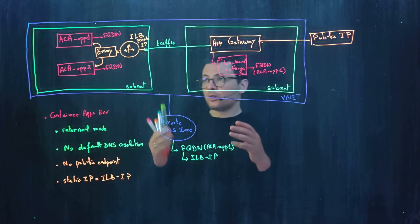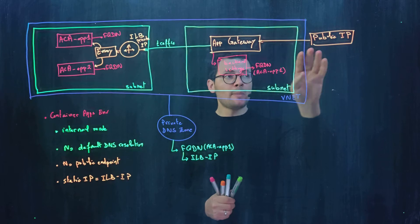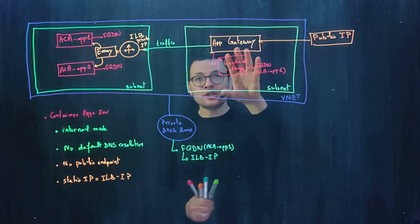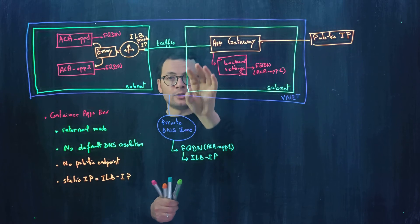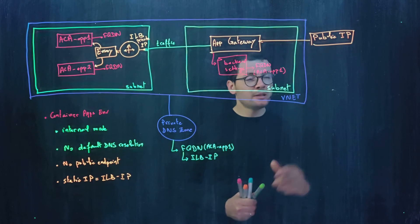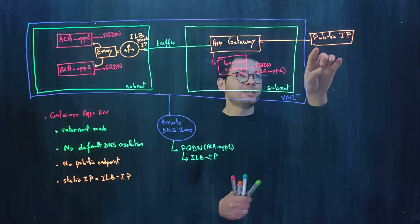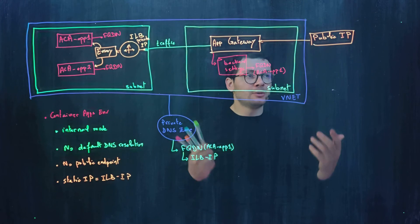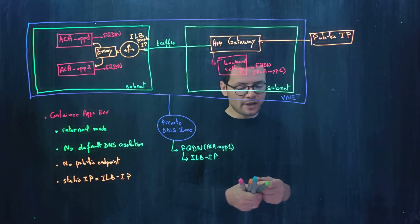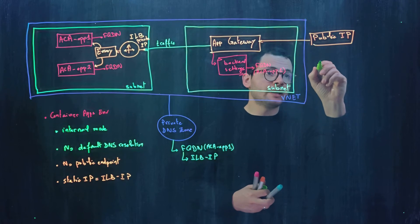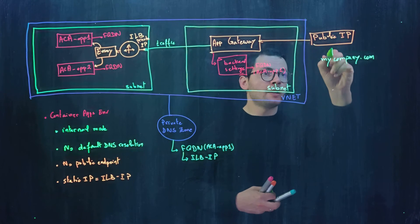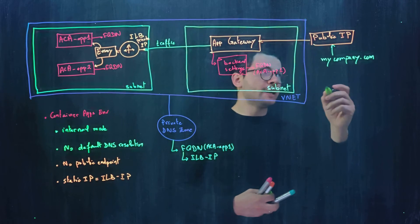Now the Container Apps are accessible through a public IP address via a publicly exposed Application Gateway injected into the virtual network. However, instead of using a raw public IP address, we want a custom domain name — something like mycompany.com — that maps to that public IP address, so users can connect using their browser or applications.